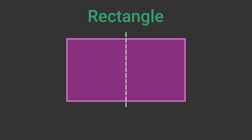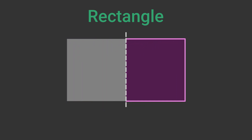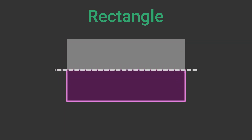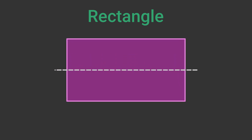A rectangle has a vertical line of symmetry, similar to a square. It also has a horizontal line of symmetry. Unlike squares, rectangles don't have diagonal lines of symmetry.